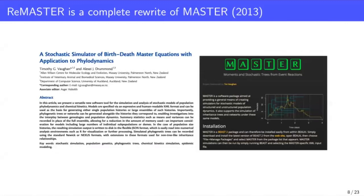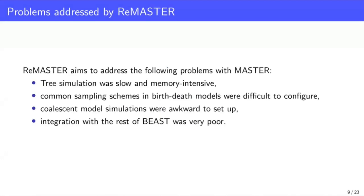Just for context, and the reason for the name, Remaster is a complete rewrite of an earlier package that was developed and published in 2013, known as Master. It is similar in many ways, but the original package had several problems that Remaster aims to address. In particular, tree simulation was very slow and memory intensive. Common sampling schemes that are used in birth-death models were difficult to configure. Coalescent model simulations were very awkward to set up, and overall, the general integration with the rest of BEAST2 was very poor. So Remaster aims to solve these problems.